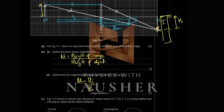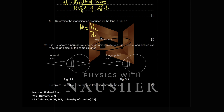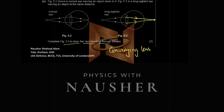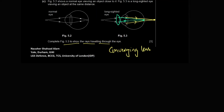For long-sightedness, the problem is that rays converge behind the back of the eye. To correct this, use a converging lens. The converging lens causes the rays to converge earlier, so after passing through the human lens they converge further and meet at the retina. The human lens alone cannot converge the rays sufficiently, so the converging corrective lens increases convergence to form the image correctly.